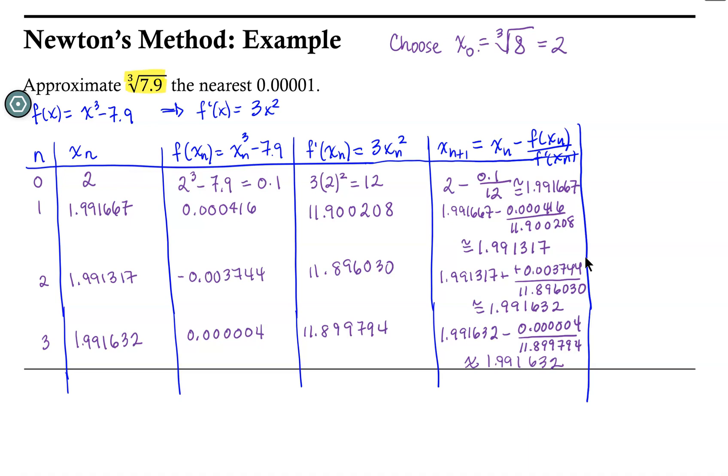Now notice that our next value, our x_4, is 1.991632. So what we can say is that the cube root of 7.9 is approximately equal to 1.991632. I hope you find this helpful.